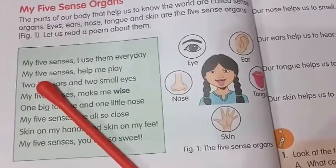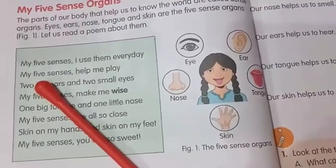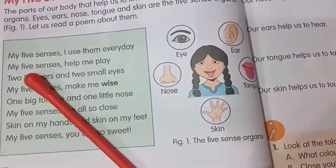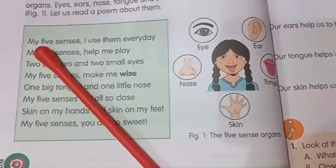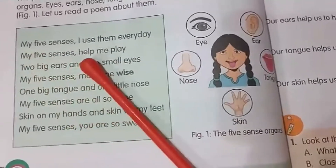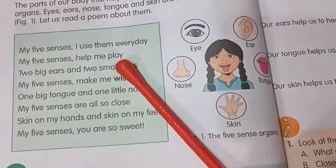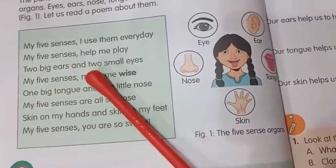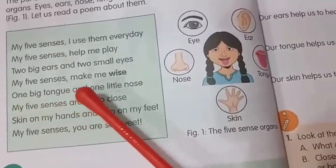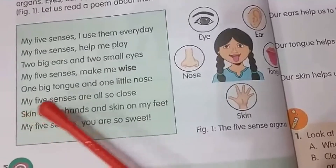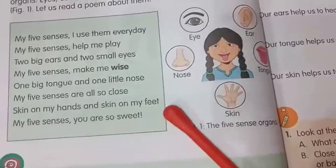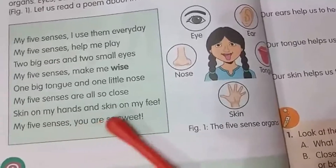Now we will see a poem about our sense organs. All these sense organs of our body make our life easy. The poem: 'My five senses, I use them every day. My five senses help me play. Two big ears and two small eyes, my five senses make me wise. One big tongue and one little nose, my five senses are all so close. Skin on my hands and skin on my feet, my five senses, you are so sweet.'